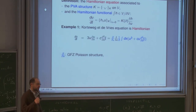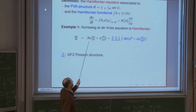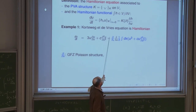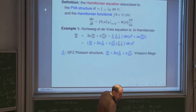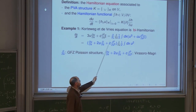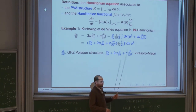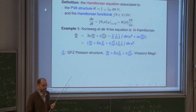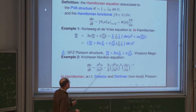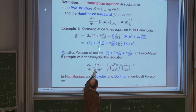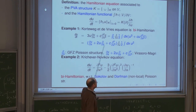For example, KdV is Hamiltonian in this sense because the right-hand side can be written as d applied to the variational derivative of a certain integral, giving one Poisson vertex algebra structure and one Hamiltonian functional. In fact, KdV can be written in two different Hamiltonian forms with two compatible Poisson vertex algebra structures, which is why we say KdV is bi-Hamiltonian. The two Poisson structures are called the Gardner-Faddeev-Zakharov structure and the Virasoro-Magri structure.